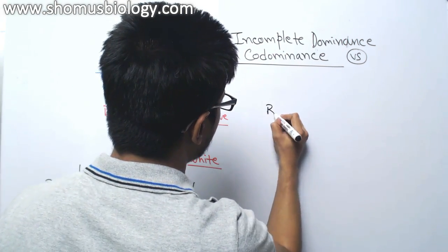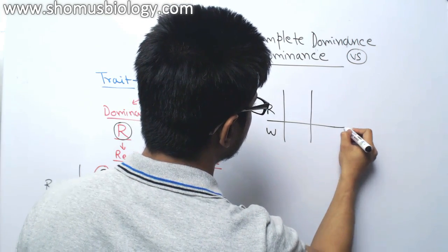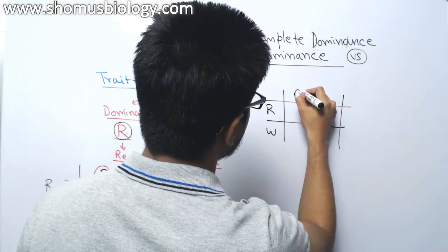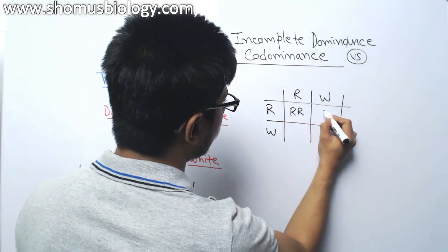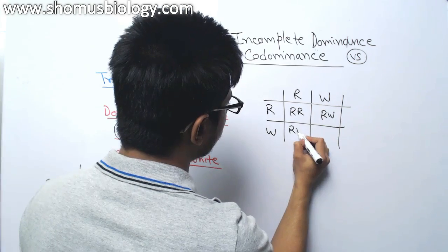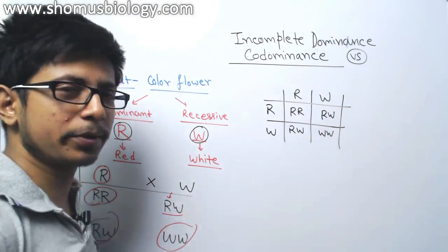Now if you do the same thing, R, let us take RW and let us take RW. So after the Punnett square we will get RR, RW, RW, WW, same Punnett square results we are getting.